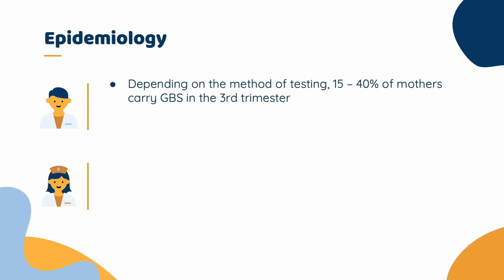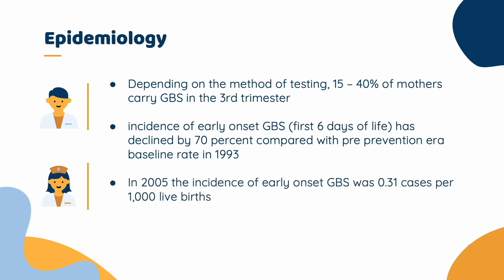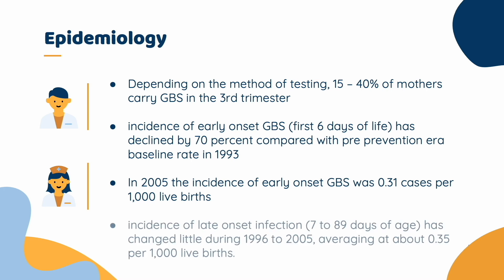Depending on the method of testing, 15 to 40% of mothers can carry GBS in the third trimester. The incidence of early-onset GBS, that is within the first six days of life, has declined by 70% compared with the pre-prevention-era baseline rate in 1993, when the ACOG guidelines were published recommending prenatal screening. In 2005, the incidence of early-onset GBS was 0.31 cases per 1,000 live births. The incidence of late-onset infection, that is 7 to 89 days of age, has changed little during 1996 to 2005, averaging about 0.35 per 1,000 live births.